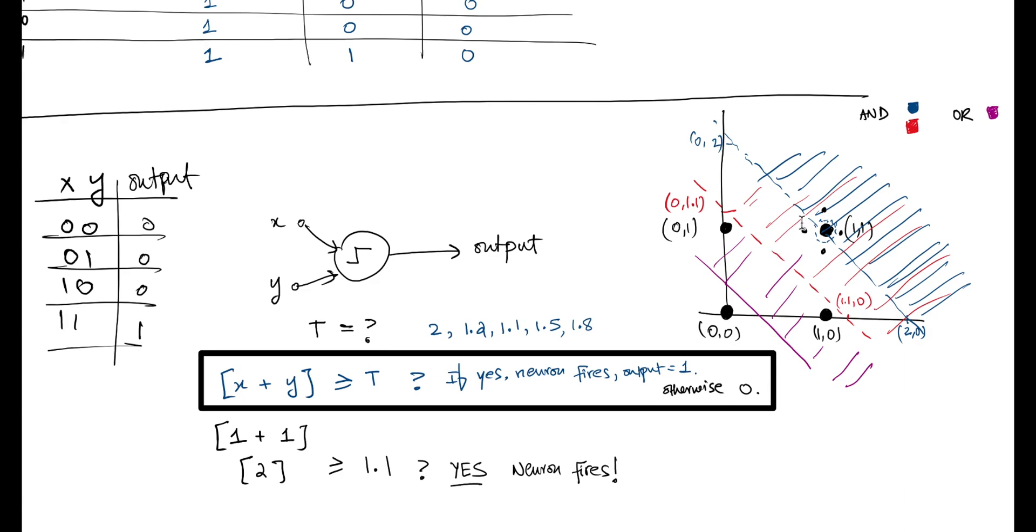With the threshold value of 2, we were able to classify this point separately from the other three. With the threshold value of 1.1, we were able to manage to do the same thing. However, when we set up a threshold value of around 1.3 or something along those lines, we were able to classify or separate all three of these points differently than the one at the origin.